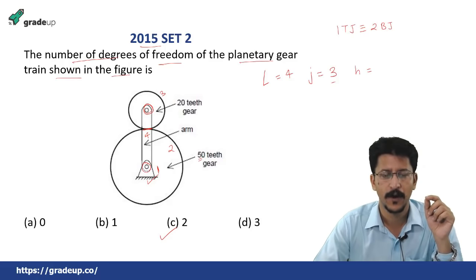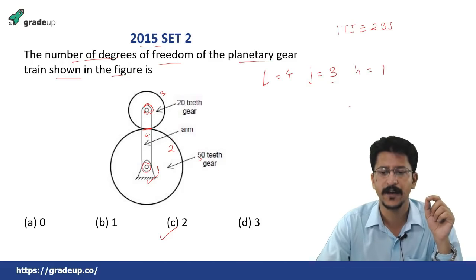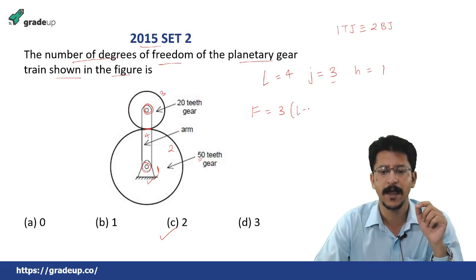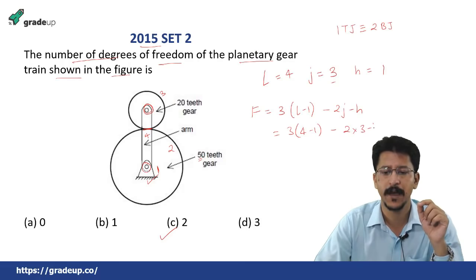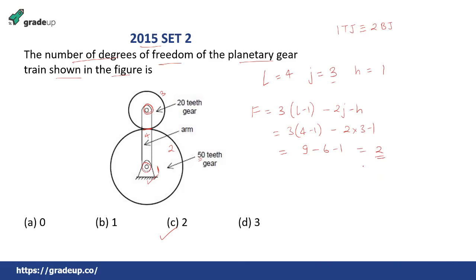One ternary joint is equivalent to two binary joints. So two binary joints from here and one binary joint from here gives us total 3 binary joints, so j equals 3. Then we have h, the higher pair — the point or line contact between gear 2 and gear 3 — so we have one higher pair. Applying the Kurzbach equation: 3(l−1) − 2j − h = 3(4−1) − 2(3) − 1 = 9 − 6 − 1 = 2.